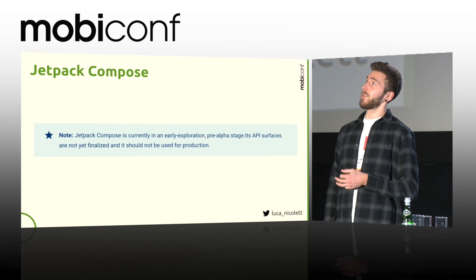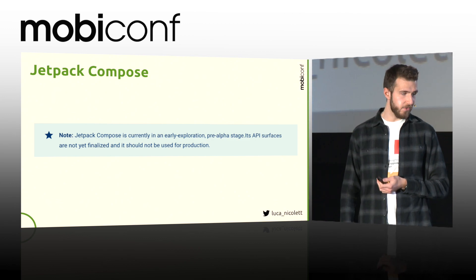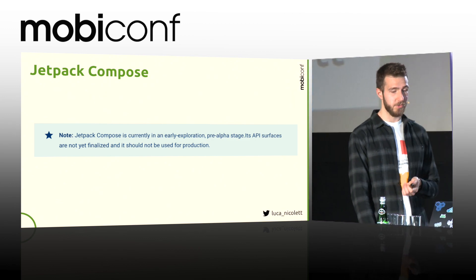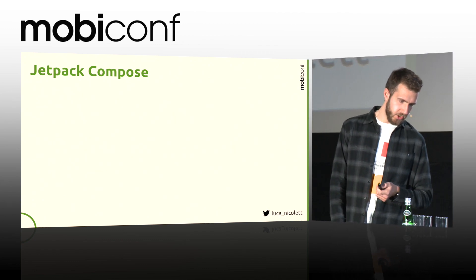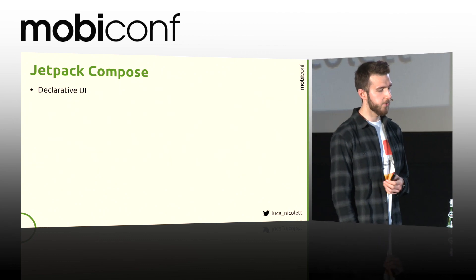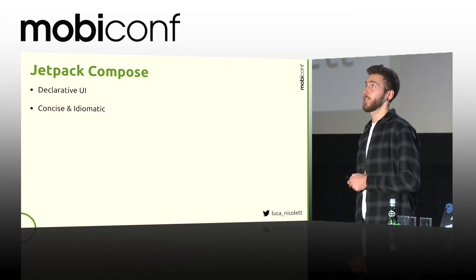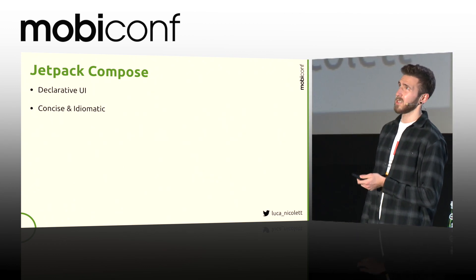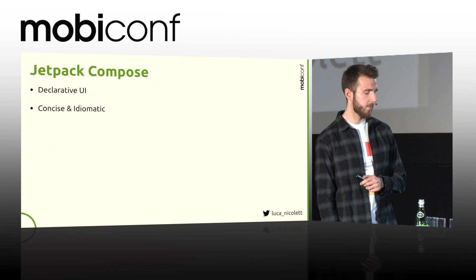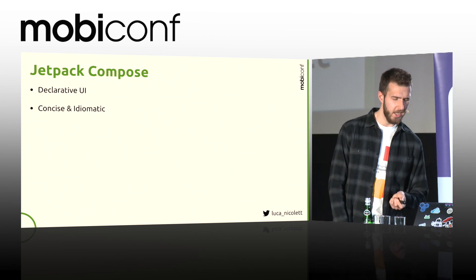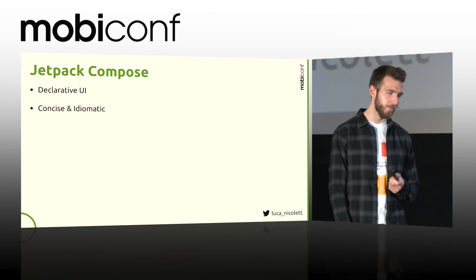There's a note on the website: Jetpack Compose is in early exploration, pre-alpha stage. Its API surfaces are not yet finalized, and it should not be used for production. But what's Jetpack Compose? It's a UI toolkit which allows us to use declarative UI patterns. It's concise and idiomatic, thanks to the Kotlin language. There's also a podcast on Android Developer Backstage where they say it wouldn't be possible to create something like this with Java. So, thanks Kotlin.